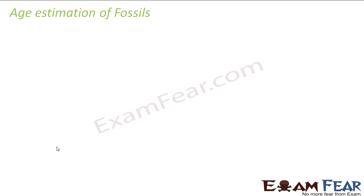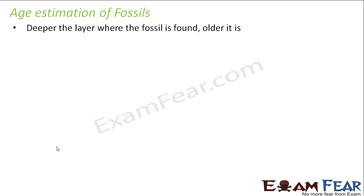So how do we estimate the age of fossils? One simple way is by looking at the layer in which the fossil is found — deeper the layer, older it is. It was also observed through many studies that fossils found deeper are simpler compared to fossils found in upper layers. This proved that organisms which came later are more complex than those which existed before. So looking at fossil layers is one way to estimate how old a fossil is.